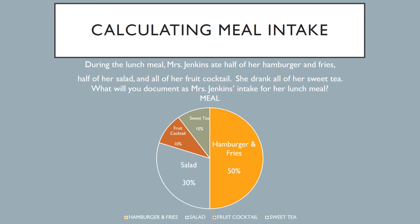So during your certification testing, you know you have two parts: the skills portion and the written knowledge portion of the test. In the written knowledge portion of your certification exam, you have different versions of the test. Right now they're using four versions: the purple version, the teal or blue version, the green version, and the orange version. You may have at least one or two questions, depending on what version of the test you receive, regarding meal intake or calculating the person's meal intake.